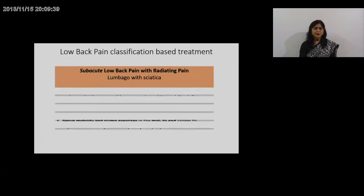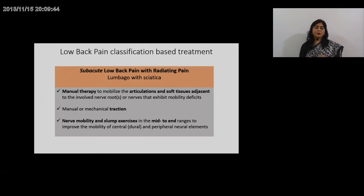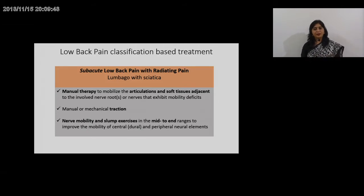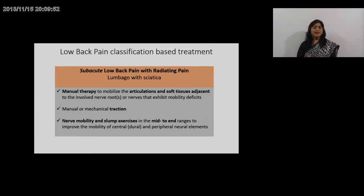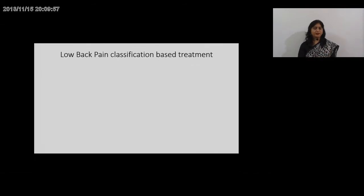In the sub-acute category of radiating pain, manual therapy to mobilize the articulation and soft tissues adjacent to the involved nerve root can again be given. Manual therapy, traction, nerve mobility, and slump exercises can be given in the mid to end range during the sub-acute phase.